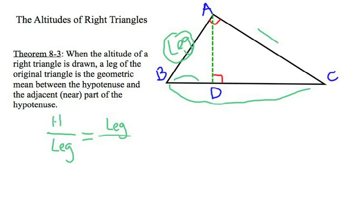And the entire hypotenuse, which we'll just label HYP hypotenuse, and the near part of the hypotenuse, which was BD, goes down in the lower part of that proportion. So that's the basic idea with this theorem.